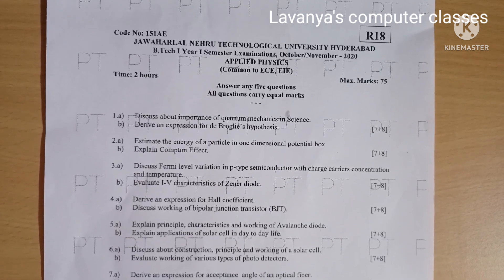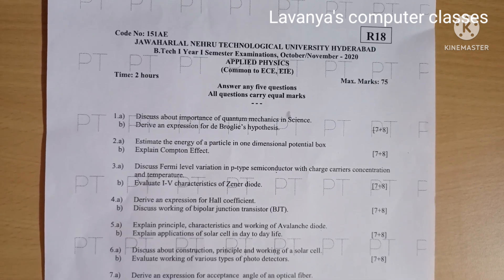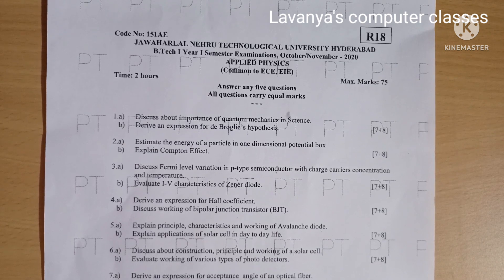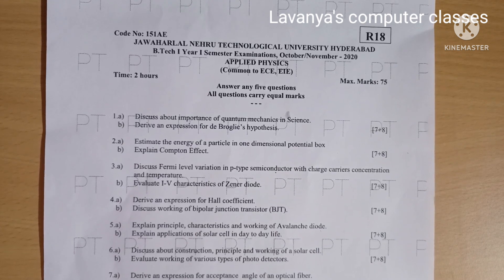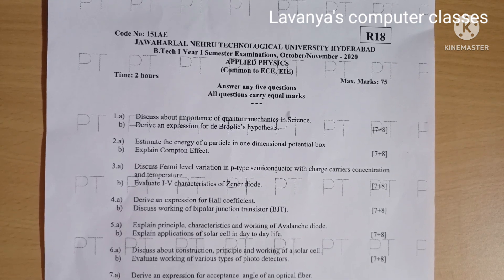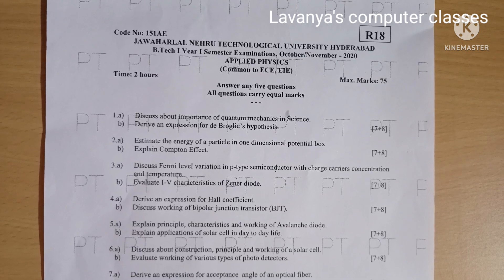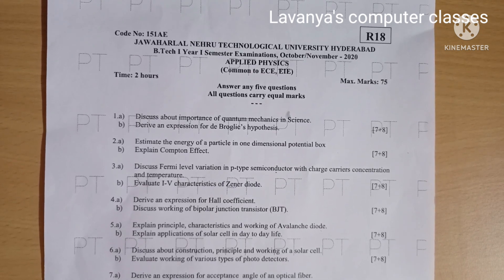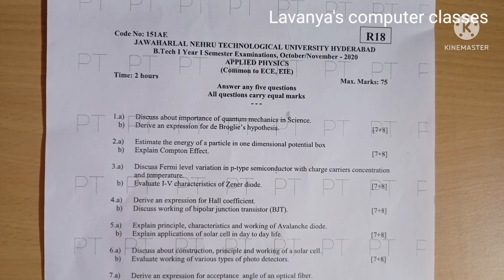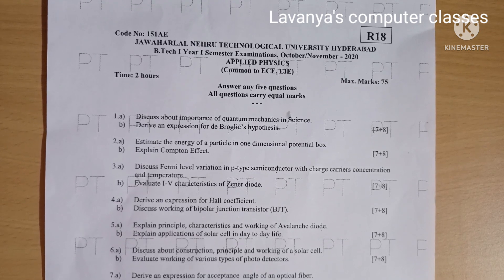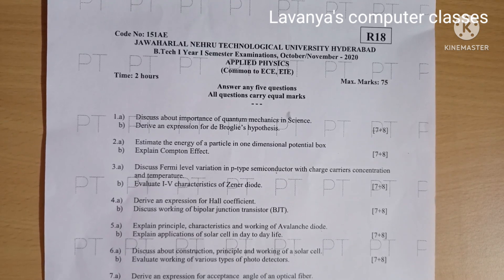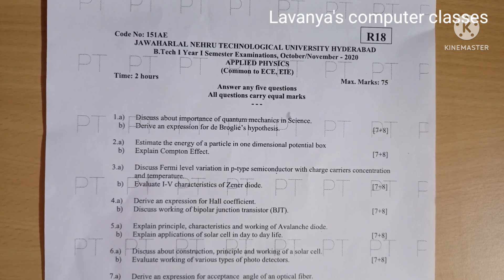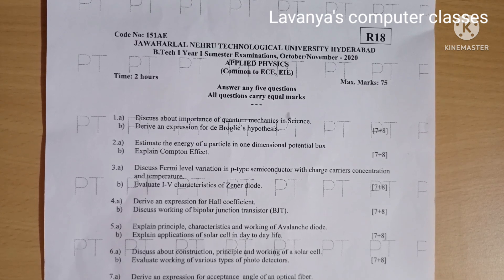Question 3b: Evaluate the IV characteristics of a Zener diode, for 8 marks. Question 4a: Derive an expression for the Hall coefficient, for 7 marks. Question 4b: Discuss the working of a bipolar junction transistor (BJT), for 8 marks.